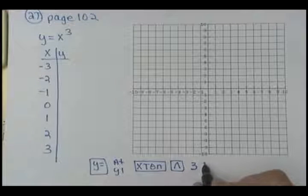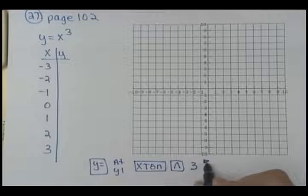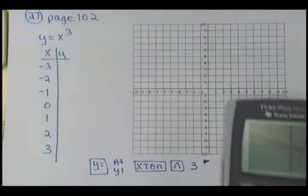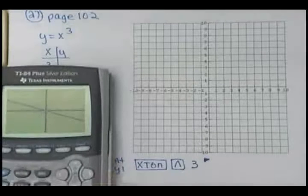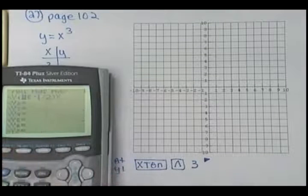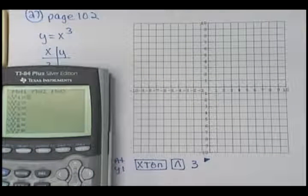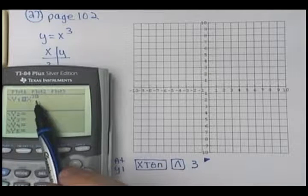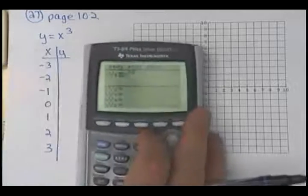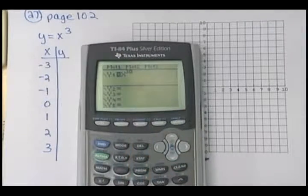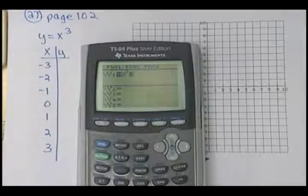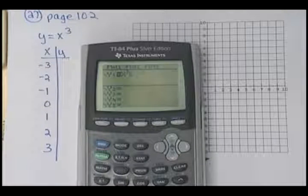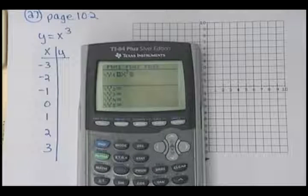Now, if your calculator is like mine, I'm going to go ahead and arrow out right there. You don't really have to, but I'm going to. Y equals clear, and you're going to have x hat 3. And does everybody see how it puts it up there in the exponent on mine? I'm going to go ahead and arrow down just so it looks like this, okay? Is everybody okay there?